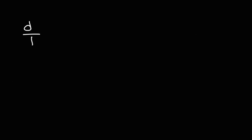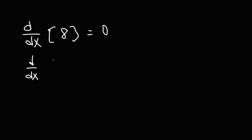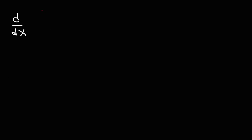Now, the last thing you need to be familiar with is that the derivative of a constant is 0. So the derivative of, let's say, negative 6, that's going to be 0. So now that we've had a quick review of some of the basic stuff, let's go over finding the derivative of a fraction.